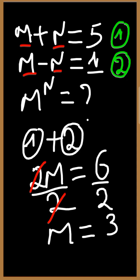Now by making use of equation 1, we can find the value of N. We are going to replace M with 3. This will give us 3 plus N is equal to 5.